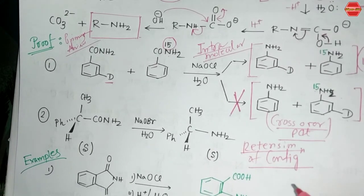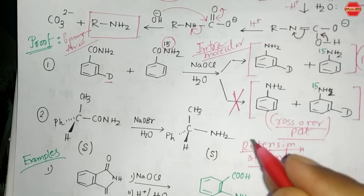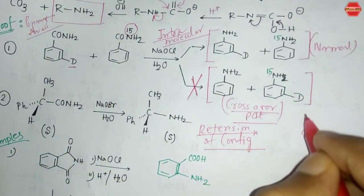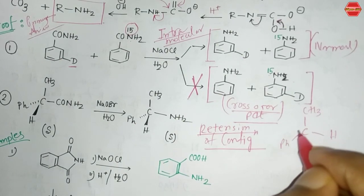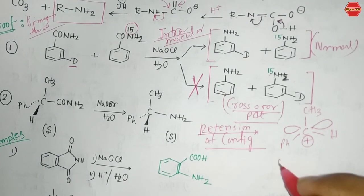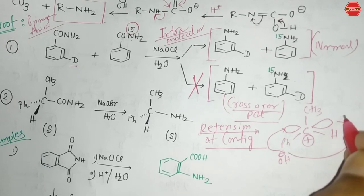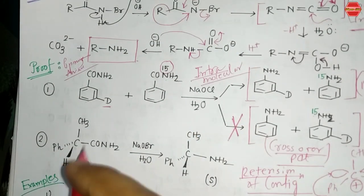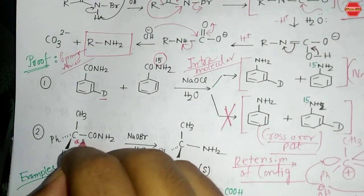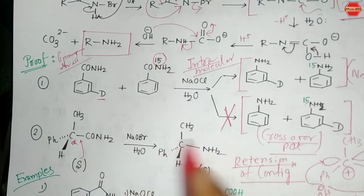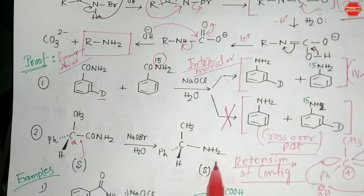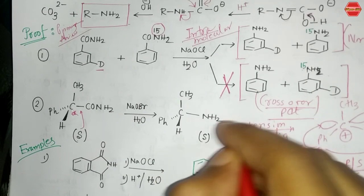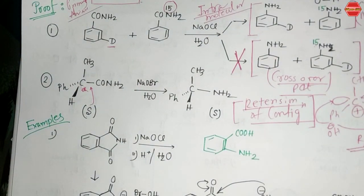If the mechanism involved a free intermediate, nucleophilic attack could occur from either face, giving a racemic mixture of R and S products. However, starting from an S-isomer with a chiral center, after rearrangement from amide to amine, the S configuration is retained. This confirms the reaction is intramolecular with retention of configuration.